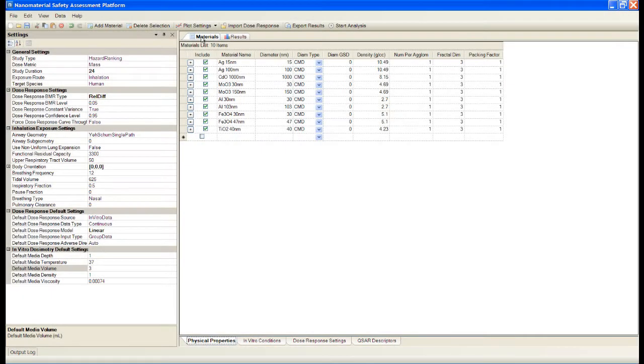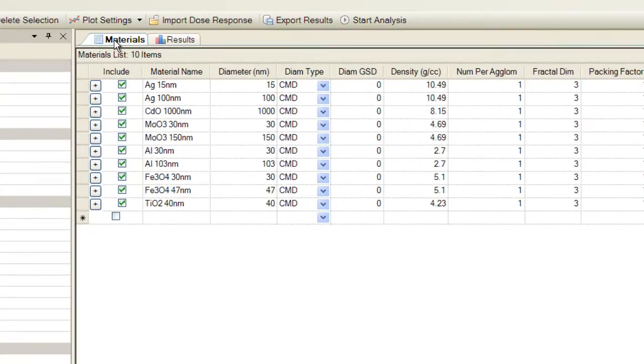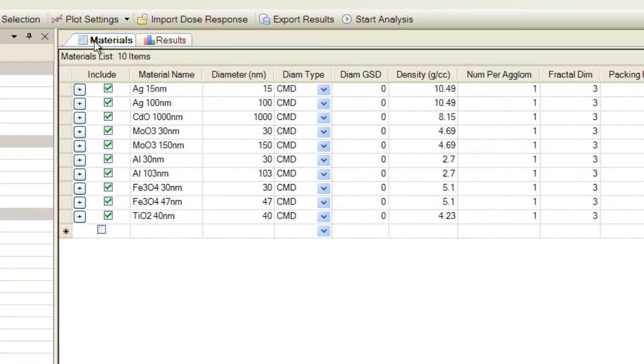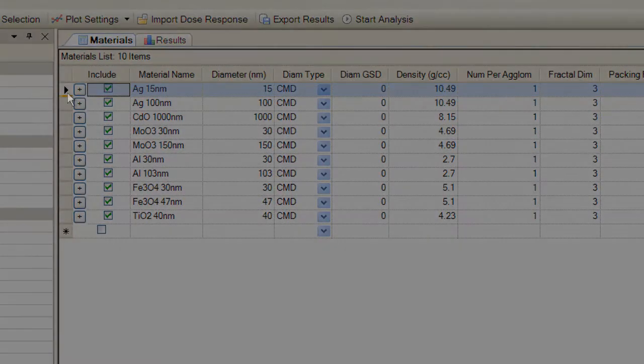The heart of NSAP is the materials list spreadsheet, located in the middle left of the application window. This spreadsheet is used to enter properties specific to each material to be included in the analysis. Each row in the spreadsheet corresponds to one material. Each column corresponds to a property which can be specified for that material.